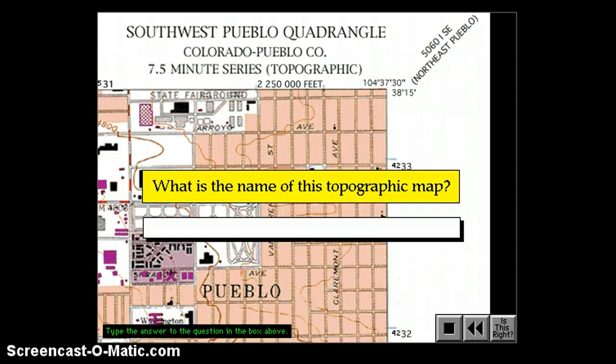For example, if you're looking for the name of a topographic map, you can find it in the upper right corner of all USGS maps. The name of this topographic map is the Southwest Pueblo Quadrangle.